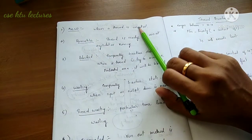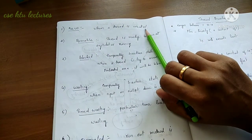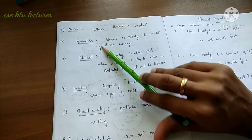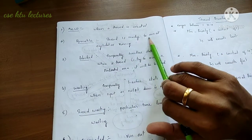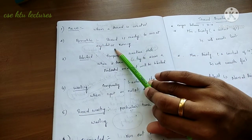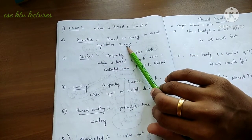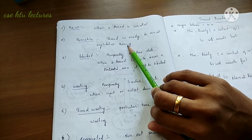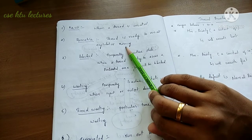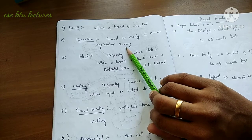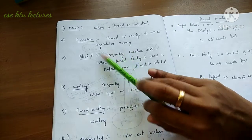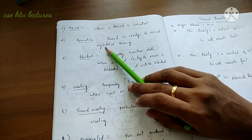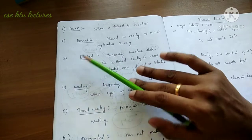When a thread is created, it enters the New state. When start() is called, it enters the Runnable state. The Runnable state means the thread is ready to run at any instant or is currently running — it has obtained the CPU and may be executing. That is the Runnable state.